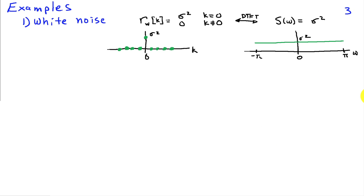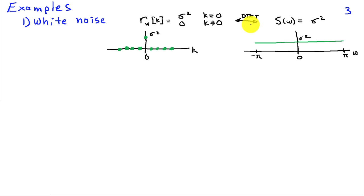Looking at examples of the power spectral density — starting with white noise. White noise has a correlation function equal to sigma squared when the lag k equals zero, and zero otherwise. Taking the discrete time Fourier transform gives a power spectrum that is just a constant, meaning identical power in all frequencies. That's why it's called white noise: the power is equally distributed across the entire spectrum.